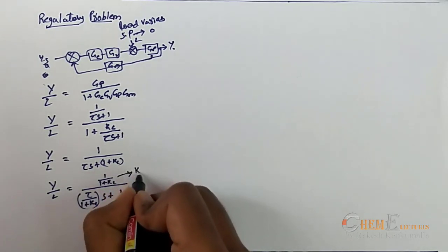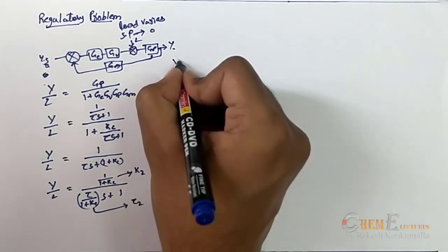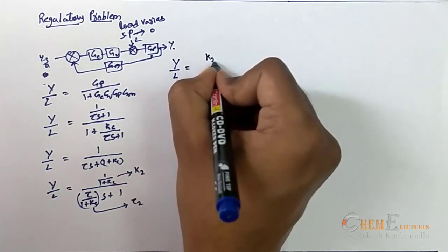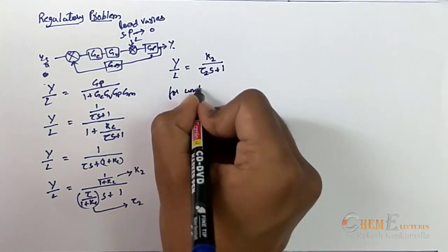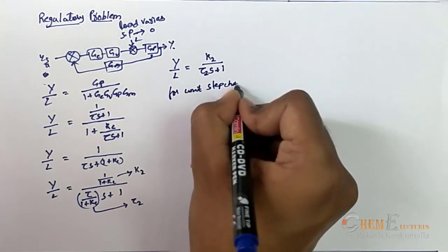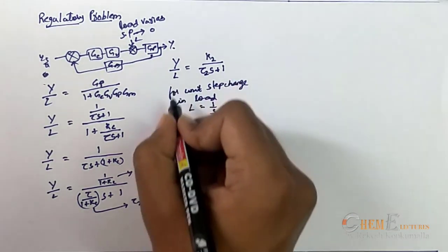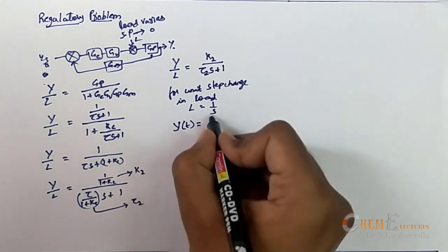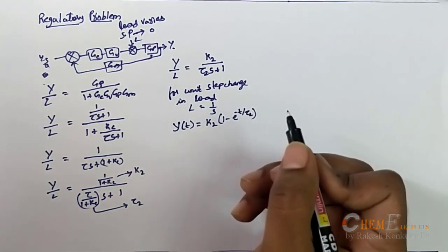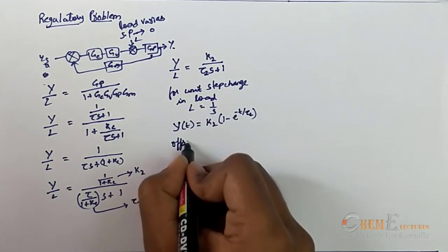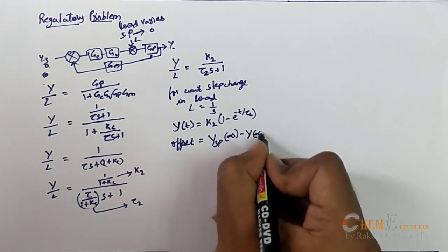Let K2 = 1/(1 + Kc) and tau2 = tau/(1 + Kc). Then Y/L = K2/(tau2*s + 1). For a unit step change in load (L = 1/s), the output response y(t) = K2 * (1 - e^(-t/tau2)). From here the offset is Ysp(∞) - Y(∞).